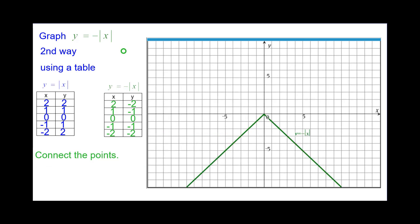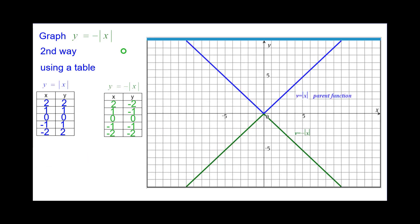Connecting the points again, we get the absolute value upside down. Comparing it to the parent function, the graphs are reflections about the x-axis.